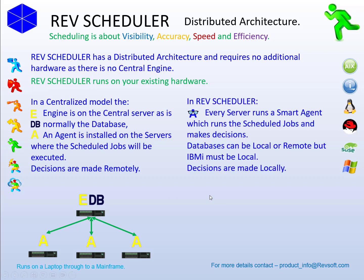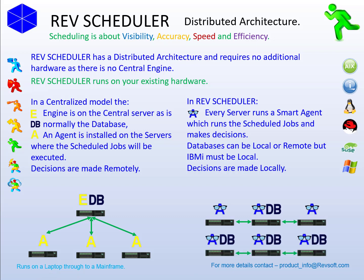In the RevScheduler model, we install what we call smart agents on each of the three servers, so all the decisions are made locally. The database, if it's an IBM i-series, must be a local database — DB2 is part of the firmware and you won't find anything faster. If it is Linux, Unix, or anything else, it is your decision as to the database type and location.